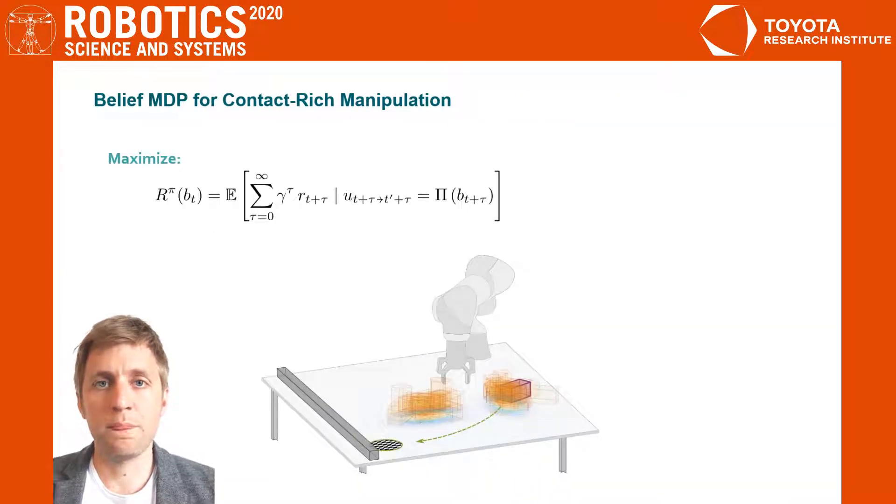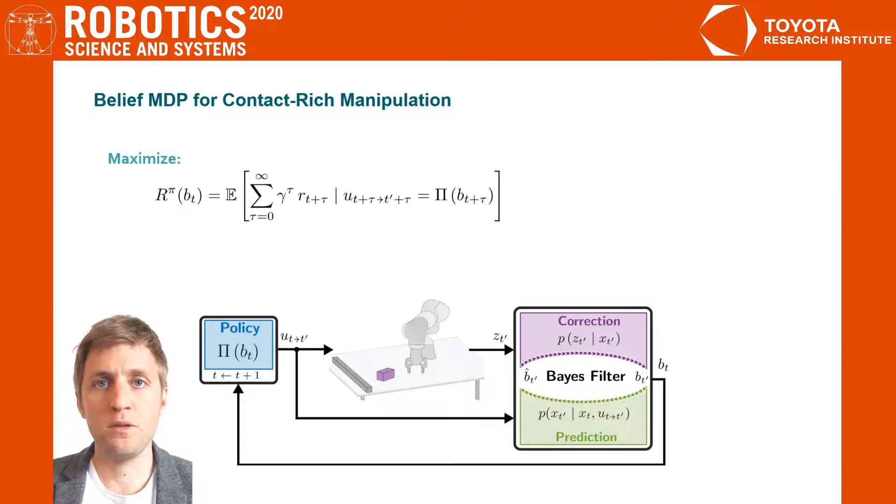This problem is a POMDP. The goal is to find a policy Pi that maximizes the cumulative expected discounted reward. We transfer this POMDP into a belief MDP.